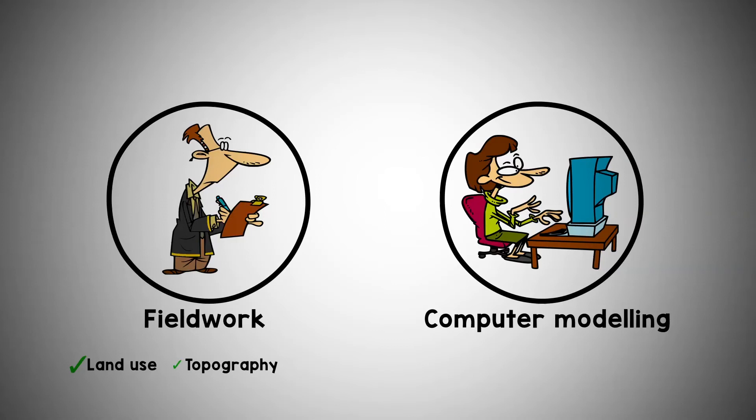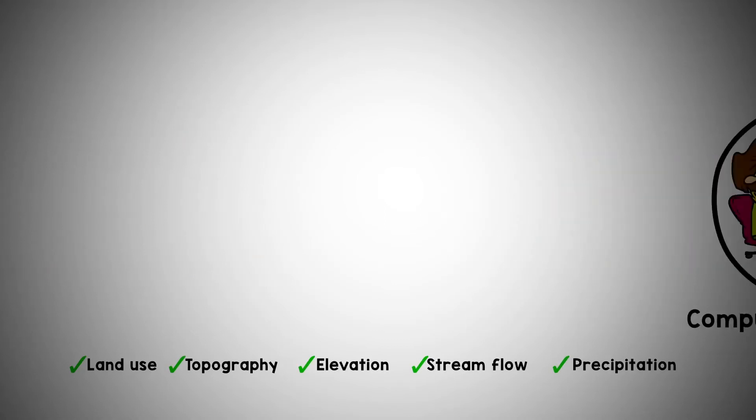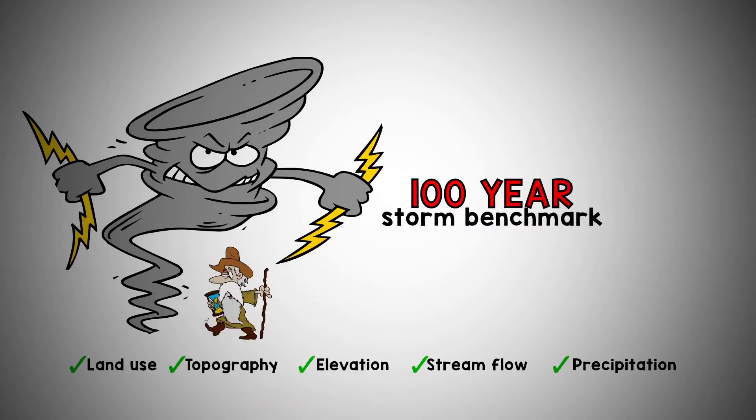Data such as land use, topography, elevation, stream flow and precipitation is gathered. In most cases we use a 100-year storm benchmark.